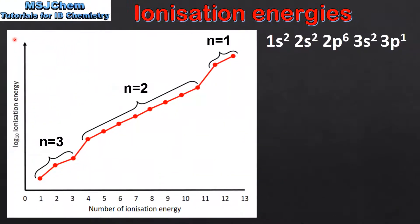For our next example we will look at the graph of the successive ionization energies for aluminium. Here we have the electron configuration of an aluminium atom which is 1s2, 2s2, 2p6, 3s2, 3p1.